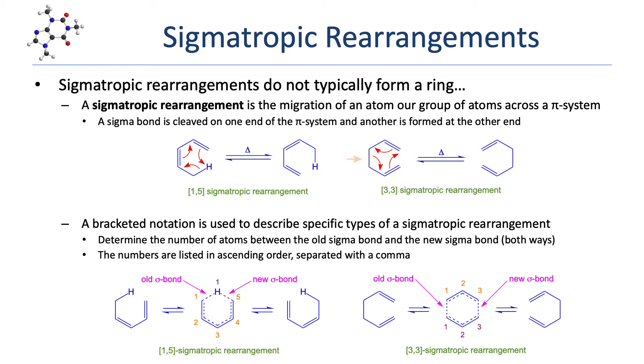In the second reaction, a three-carbon allyl group migrates from one carbon to another carbon on the end of the pi system. One carbon-carbon sigma bond is cleaved and another is formed in the product.